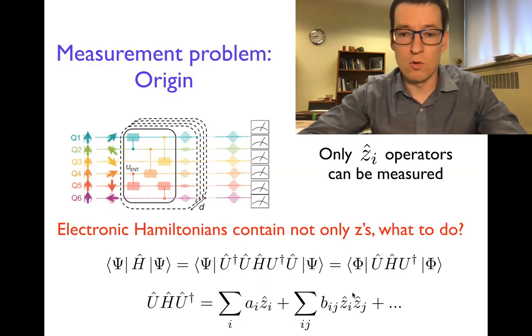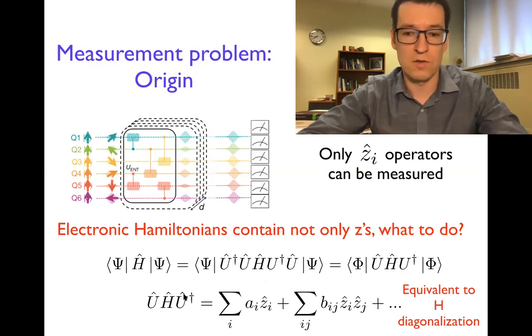Now, you may say, oh, wait a minute, but isn't that pretty much equivalent to solving the eigenvalue problem with this unitary transformation? And indeed, that's the case. That's why finding such unitary is essentially equivalent to solving the original problem and cannot be done for interesting problems.